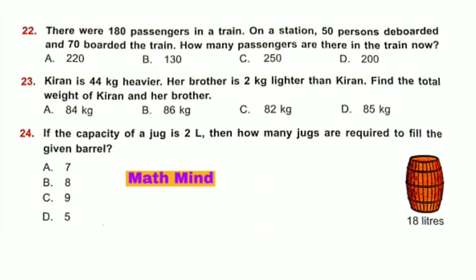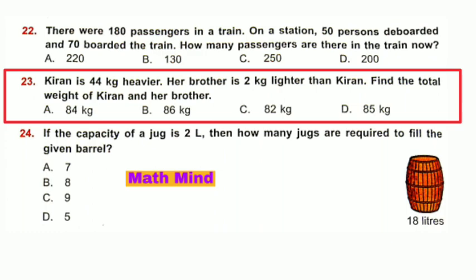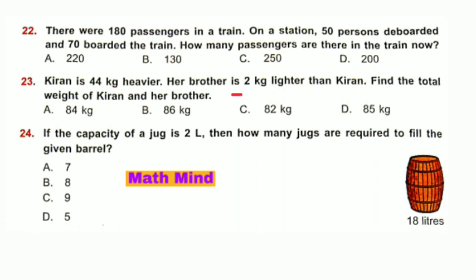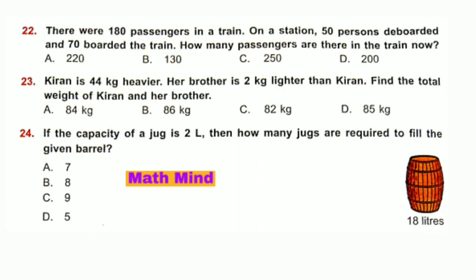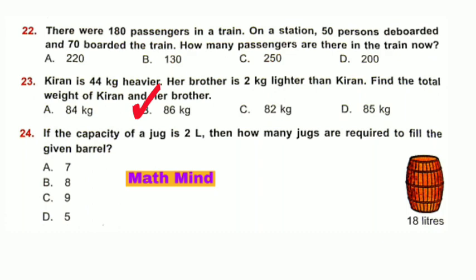Question number 23: Kiran is 44 kilograms. Her brother is 2 kilograms lighter than Kiran. Find the total weight of Kiran and her brother. Brother's weight: 44 − 2 = 42 kg. Total weight: 44 + 42 = 86 kg. Option B is correct: 86 kilograms.